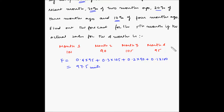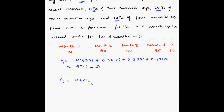Now suppose the actual sales for the fifth month turns out to be 110 units. Let's find out the forecast for the sixth month. In this case, we will take 40 percent of the last month, which is the fifth month: 0.4 multiplied by 110, plus 0.3 multiplied by 95.